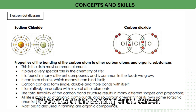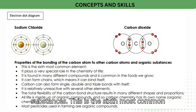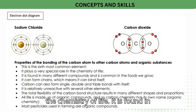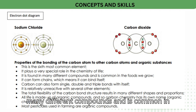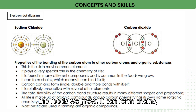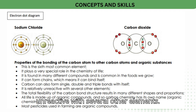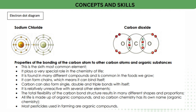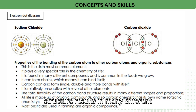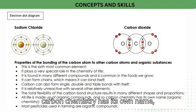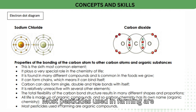Properties of the bonding of the carbon atom: carbon is the sixth most common element and plays a very special role in the chemistry of life. It is found in many different compounds and is common in the foods we grow. It can form chains, meaning it can bind itself. Carbon can also form single, double, and triple bonds with itself. It is relatively unreactive with several other elements. The total flexibility of the carbon bond structure results in many different shapes and proportions. All life is made up of organic compounds, so carbon chemistry has its own name — organic chemistry. Most pesticides used in farming are organic compounds.